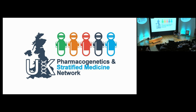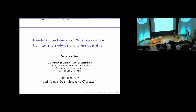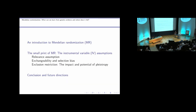Our first speaker is Dr. Verena Zuber from Imperial College, talking about Mendelian randomisation — strengths and limitations. My name is Verena Zuber and I'm a senior lecturer at the Department of Epidemiology and Biostatistics at Imperial College. I've been working on methods development for MR for roughly seven years. I'll give a conceptual introduction into Mendelian randomisation, covering the instrumental variable assumptions and showing where it goes wrong and where it works.